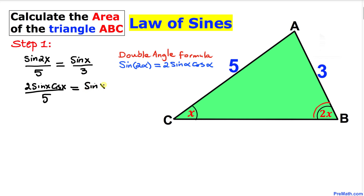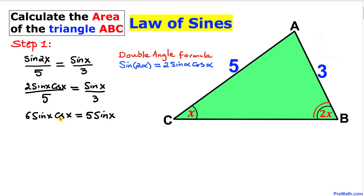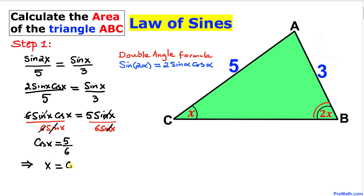So we have 2·sine x·cosine x divided by 5, equal to sine x divided by 3. Cross-multiplying gives us 6·sine x·cosine x equals 5·sine x. We isolate cosine x by dividing both sides by 6·sine x. The sine x terms cancel, leaving cosine x equals 5/6.